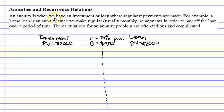I would like to start with the loan. Initially, we owe the bank $2,000, and then at the end of the year, they're going to charge us interest — 5% interest. 5% of $2,000 is $100.